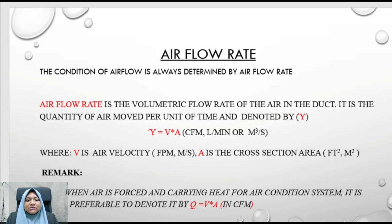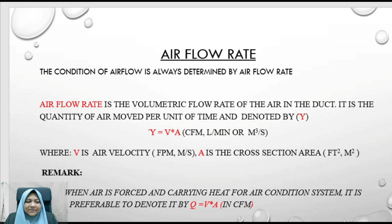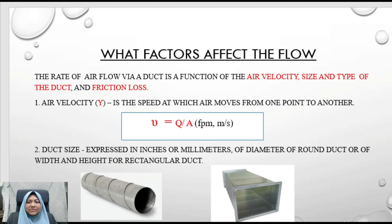When air is forced and carrying heat in an air conditioned system, it is preferable to denote the flow rate as Q = V × A. Q is normally in CFM (cubic feet per minute), and air velocity in FPM (feet per minute). Alternatively, SI units can be used — meters per second for velocity and cubic meters per second for flow rate — but you must ensure consistent units. The cross-sectional area A must match the unit system used.